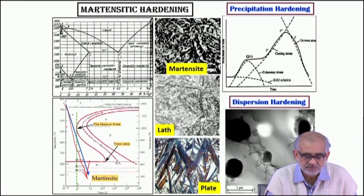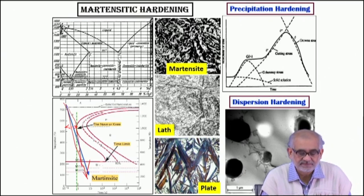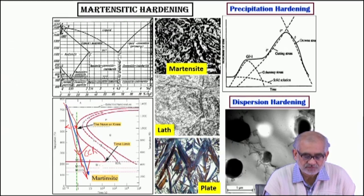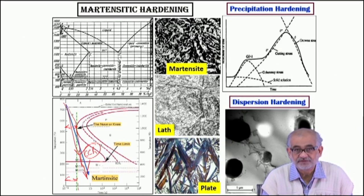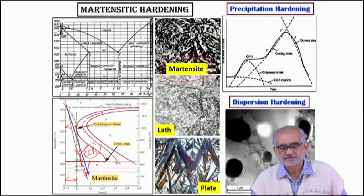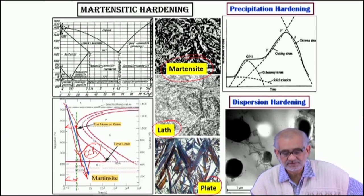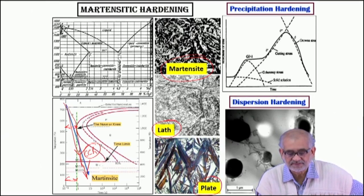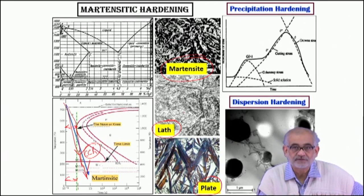We must adopt a quenching rate that will avoid the nose of the TTT curve — the so-called critical cooling rate, which is the minimum cooling rate that can avoid intersecting the pearlitic or bainitic start line. In other words, we have to adopt some drastic quenching because this time period is very very small. When we quench, we convert the surface into martensite — that is our desired microstructural product. Martensite can appear either in lath morphology or in acicular or plate morphology.